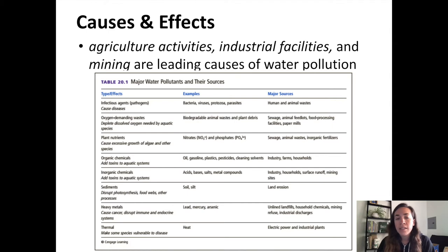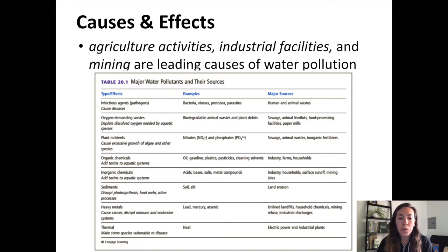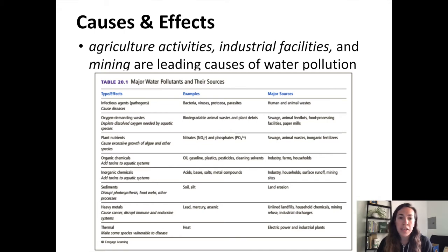We also have physical elements. Thermal — basically heat — pollution is found often during the cooling process in industrial and electrical power generating plants. One I would add that's not on the list is acoustic or sound pollution. Research on marine animals shows that sound pollution from sonar, industrial noise, or shipping lanes can disrupt the ability of marine organisms — including benthic organisms like stomatopods and other crustaceans — to communicate.